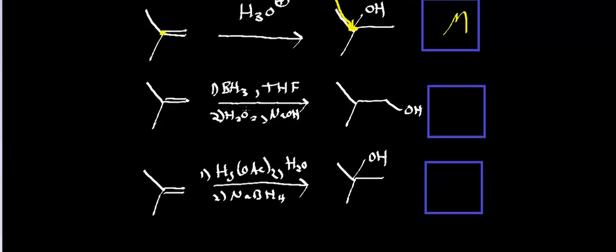Let's look at this one. When you see BH3 and THF in the first step, that's a dead giveaway that this reaction is what's referred to as hydroboration oxidation. And what you should notice is that the OH group right here — which ultimately comes from this hydroxide — adds to the least substituted position. In other words, we're hydroxylating the least substituted side. That automatically makes this anti-Markovnikov.